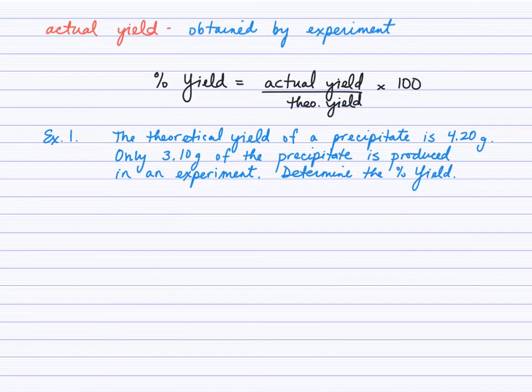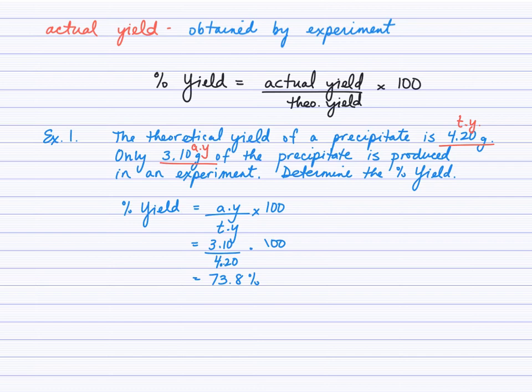The most straightforward application is a question where you're given both the theoretical yield and the actual yield. 4.20 g was defined as the theoretical yield, and 3.10 g of the precipitate was produced in the actual experiment — that's our actual yield. Dividing those and multiplying by 100, we finish with 73.8% yield.